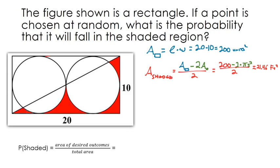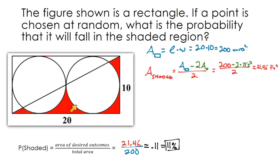So the area of our desired outcomes is roughly 21.46, and the full area is 200. Doing the division gives roughly 0.11 or 11%. The probability concept isn't too deep here, but finding the area of the shaded region requires some creativity. As long as you end up with roughly 21.46, you're good to go.